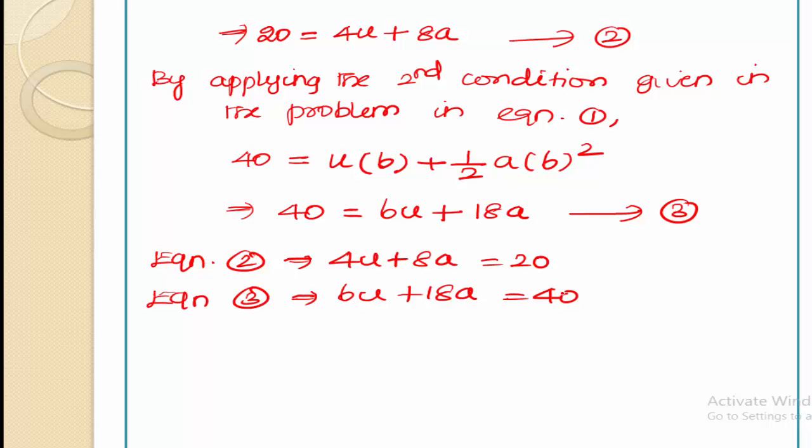By solving these two equations, we can get the value for u is equal to 1.667 meters per second, and acceleration a is also 1.667 meters per second squared. So this is all about the problem.